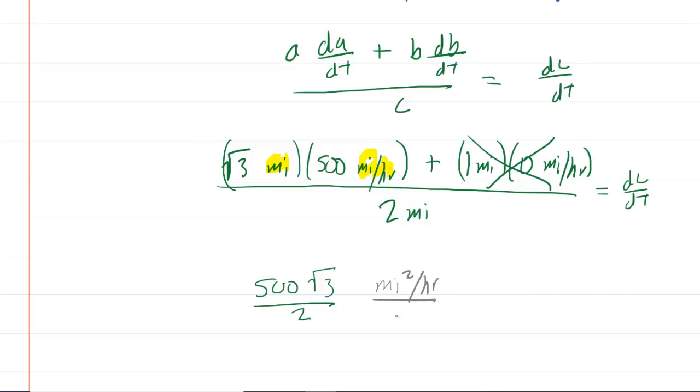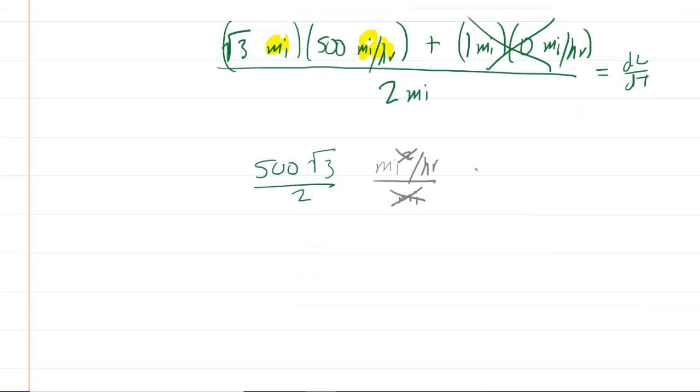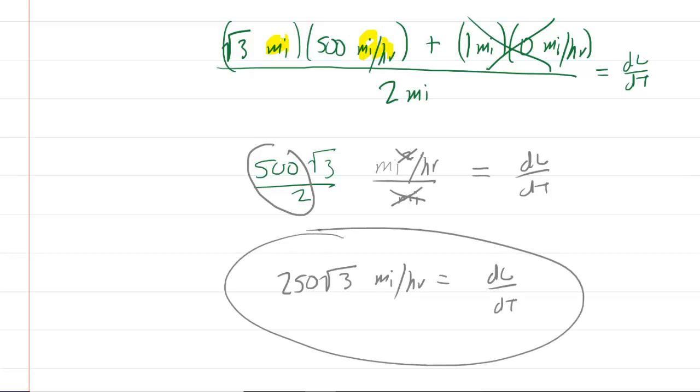But then that's divided by just miles. So because we have miles squared divided by miles, one pair of miles will cancel. And that will give us 500 root 3 over 2 miles per hour. Of course we can simplify this because 500 divided by 2 is 250. And then we have root 3 miles per hour. And this would be the final answer for the rate at which the hypotenuse of our right triangle was changing.